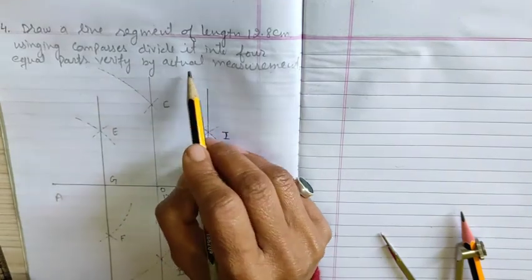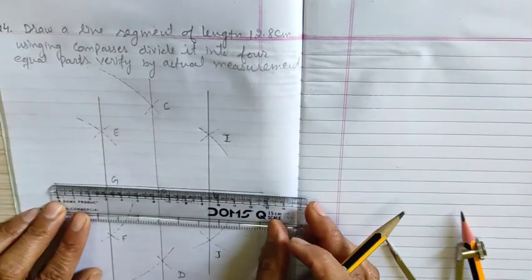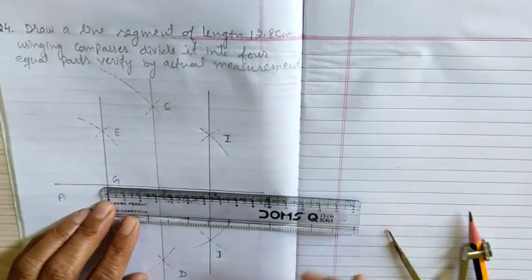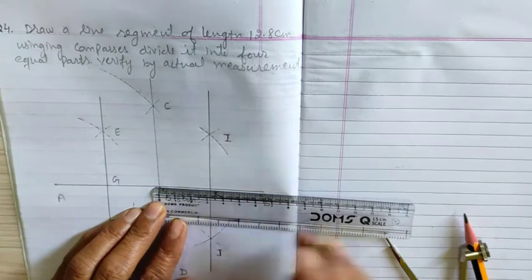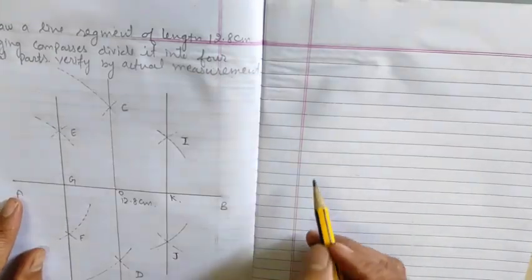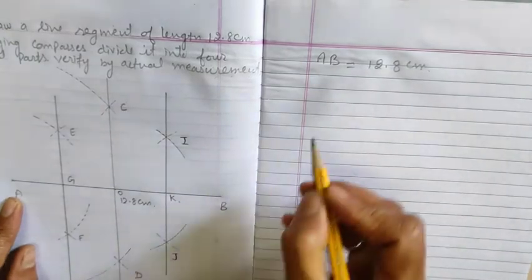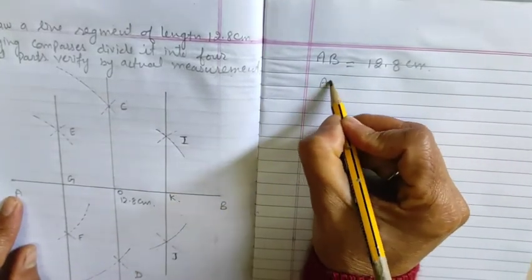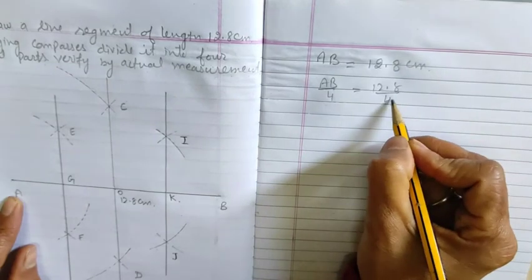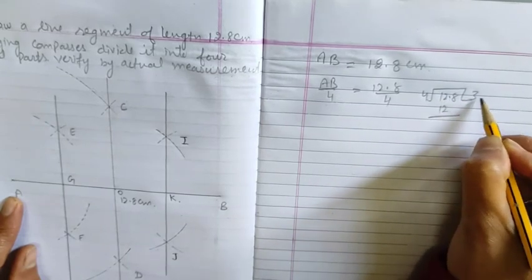Now verify by actual measurement. You have to verify the length of each part — this is 3.2 cm, and this is 3.2, and 3.2, and 3.2 cm. The total length of AB is equal to 12.8 cm. We divide AB into 4 equal parts, so AB divided by 4 is equal to 12.8 divided by 4.